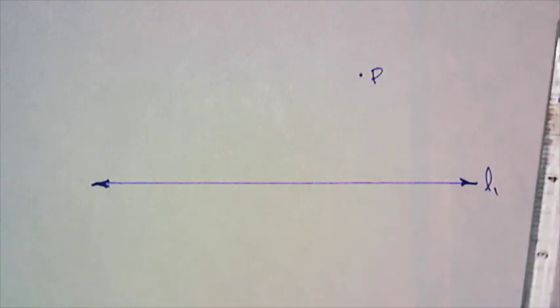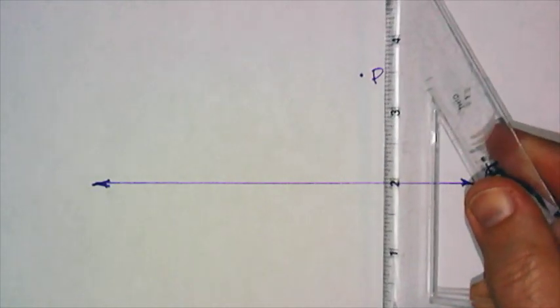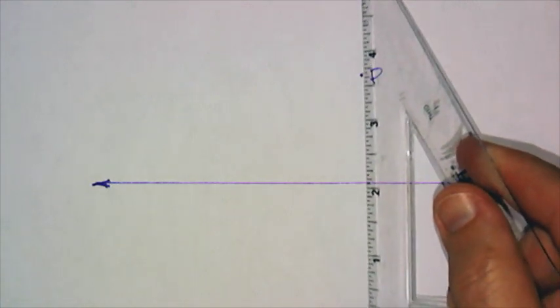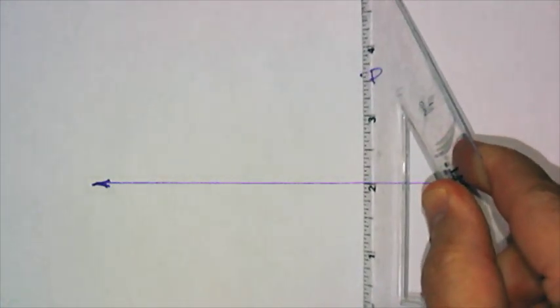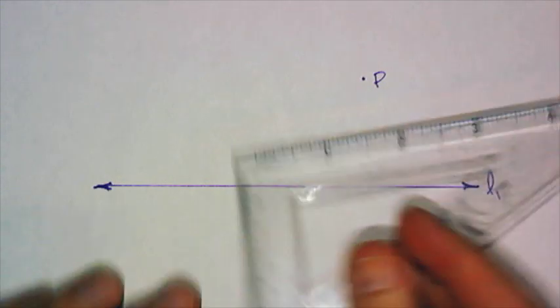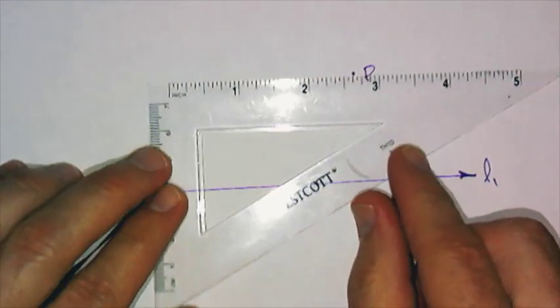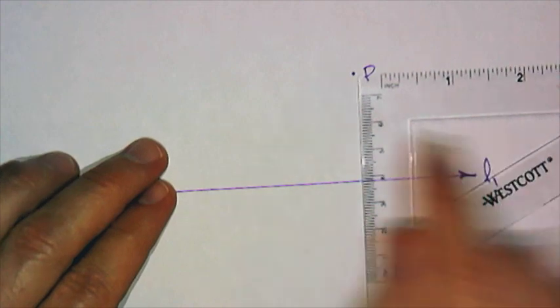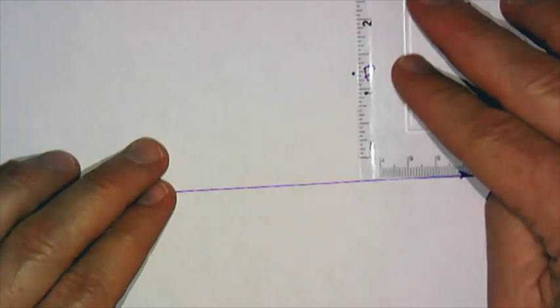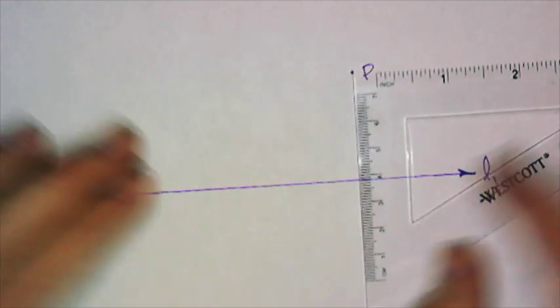To make a parallel line, I want to construct first a perpendicular line through P, and then another perpendicular line through that line, which would cause it to be parallel. So, if it's perpendicular this way and perpendicular this way, it would be parallel to line 1.